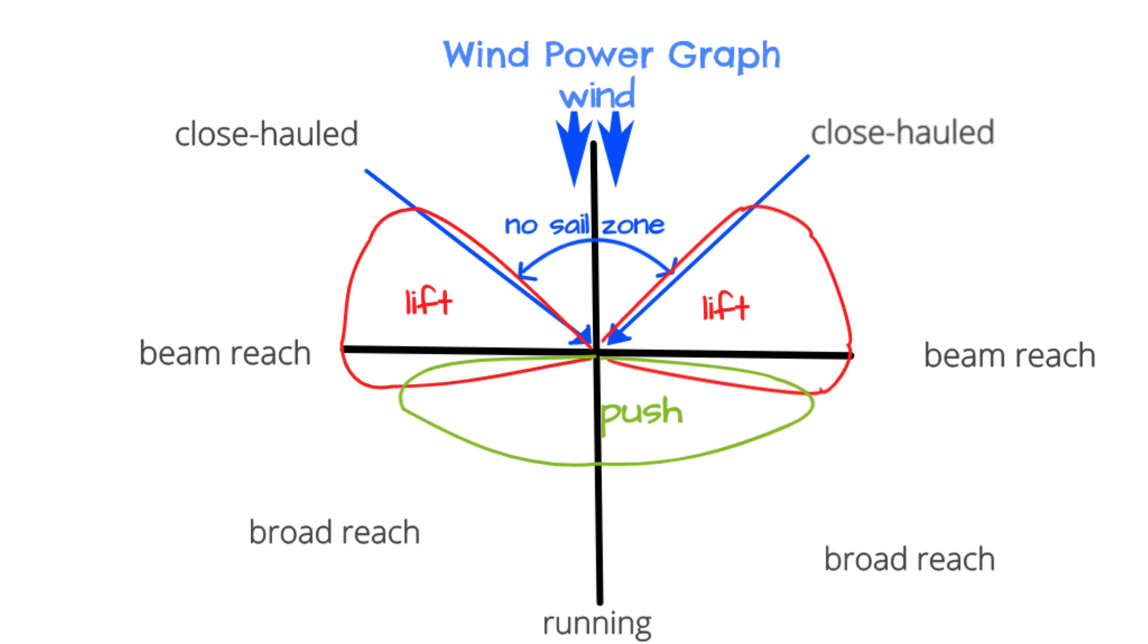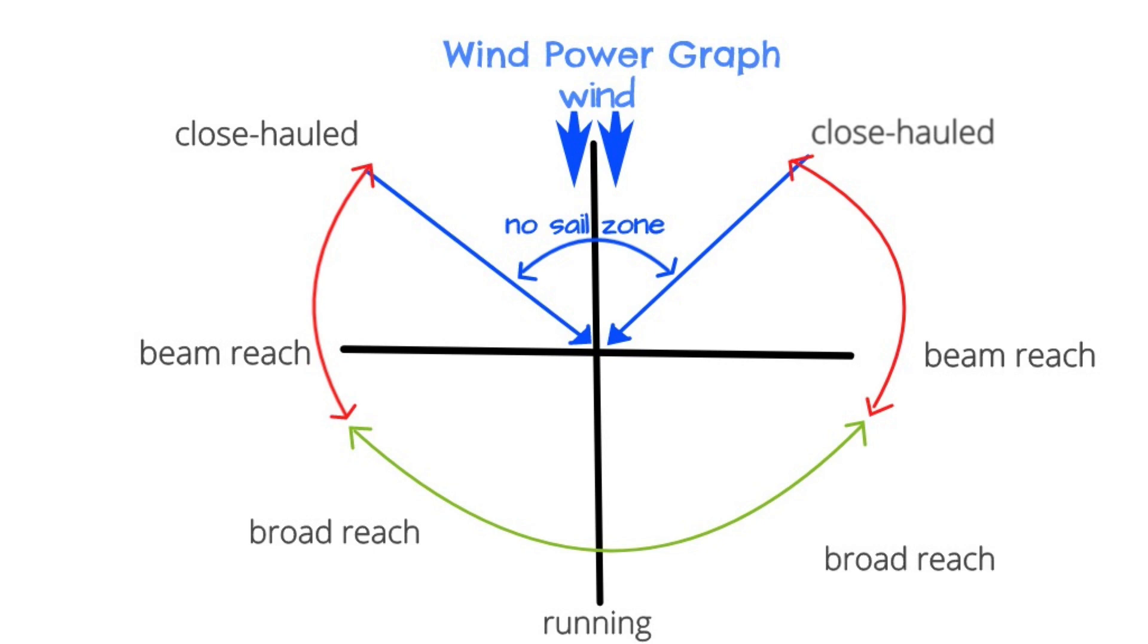So let's simplify this graph. I'll outline the lift wind angles in red and the push wind angles in green, then eliminate the interior contents. And then we have a simple graph that answers the question of push versus lift.